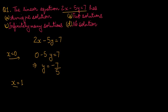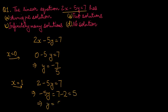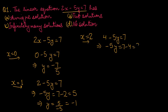अगर हम x को 1 fit out करते हैं, तो 2 into 1 is 2 minus 5y equals to 7 बन जाएगा। minus 5y equals to 5, तो y की value minus 1 आगई। अगर हम x को 2 fit out करते हैं, तो 4 minus 5y equals to 7, और y equals to minus 3 upon 5 आगई। तो जैसे जैसे हम x की value fit out करते जाएंगे, y की value आती जाएगी। इसके infinitely many solutions हैं। Option number C correct है।